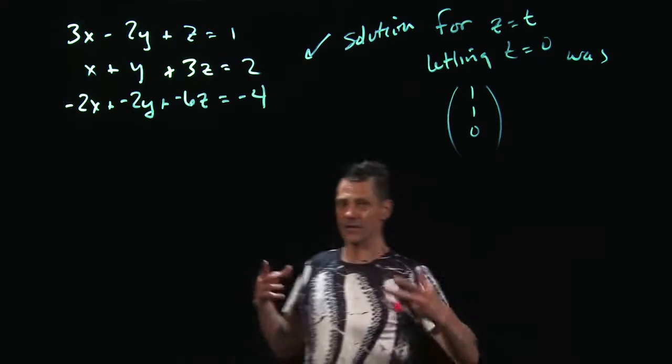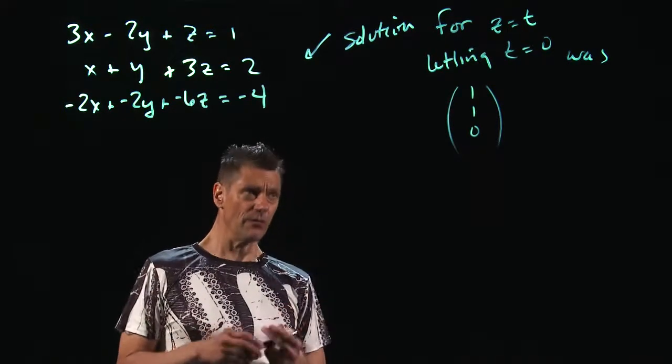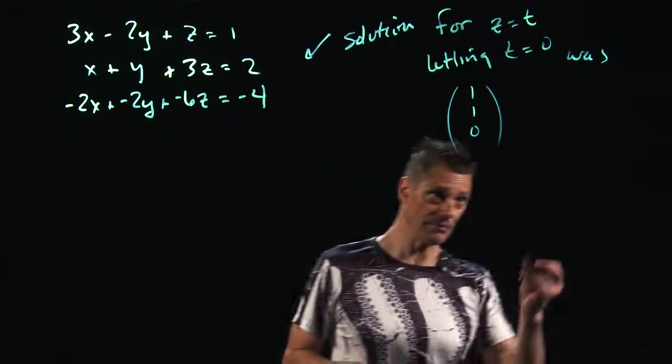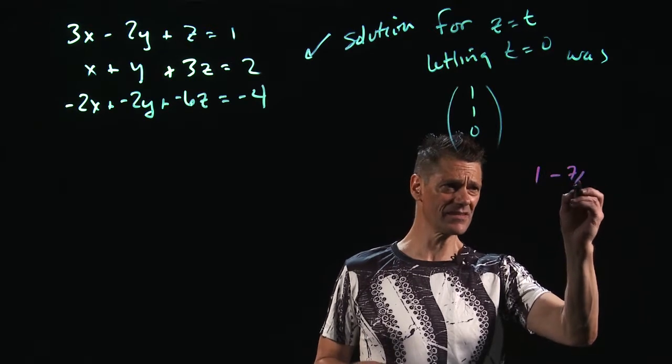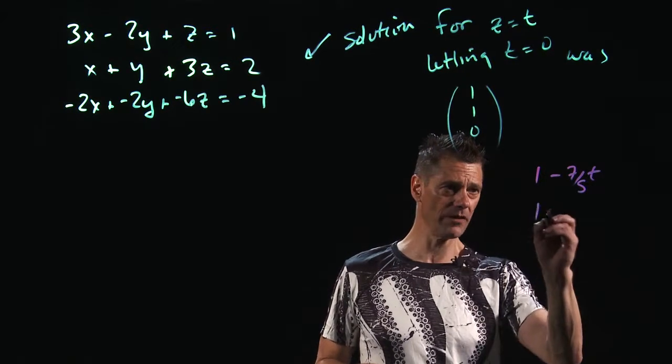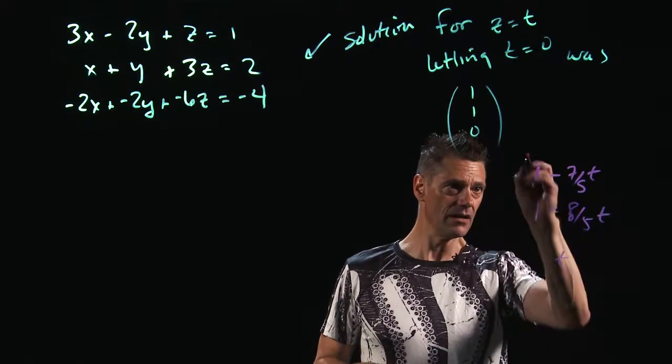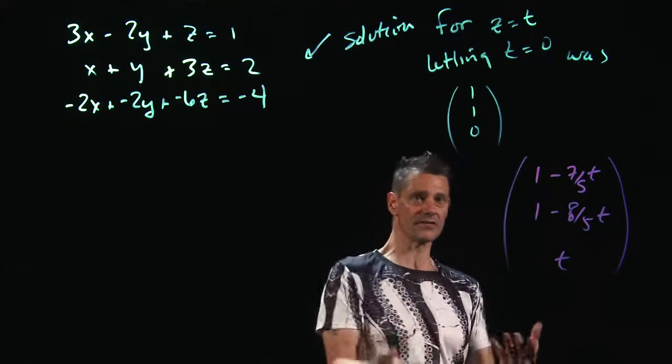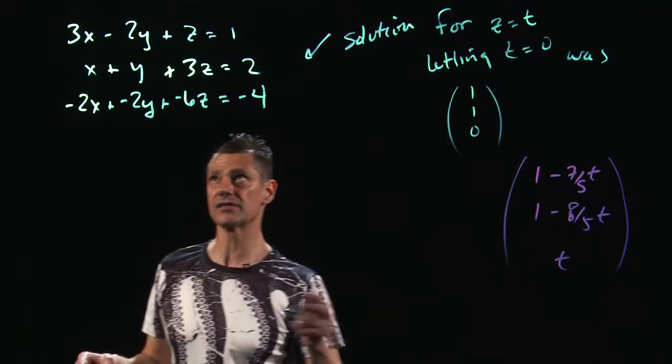All right. So, we did this Gauss-Jordan elimination. We cleaned it up. We found that all vectors of a certain point, and I believe it was 1 minus 7 fifths t, 1 minus 8 fifths t, and t were the solutions to this. And we let t equals 0 just because I want to do an easy one. Let's see if it really works.